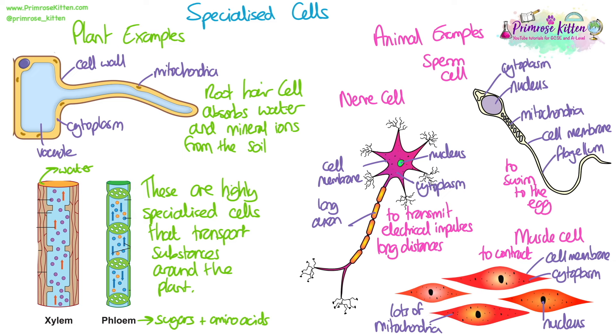You should be able to recognise these specialised cells, but also be able to label all of the structures that we normally label in a basic cell on these cells that look slightly different.